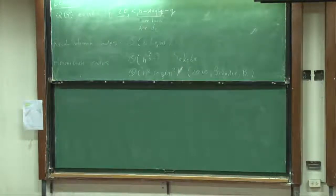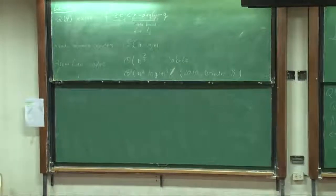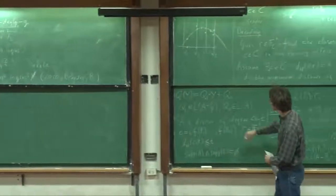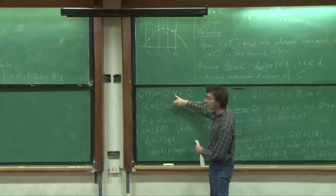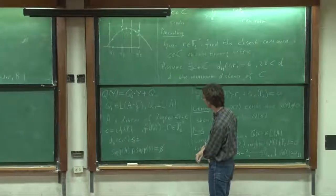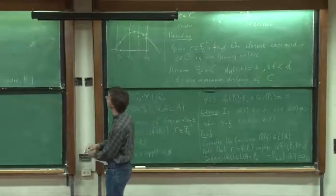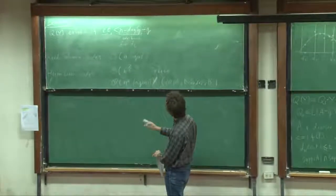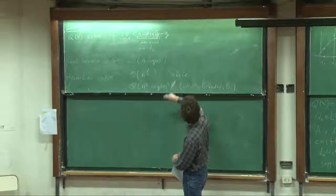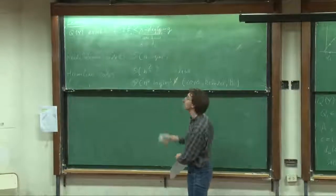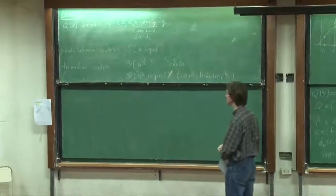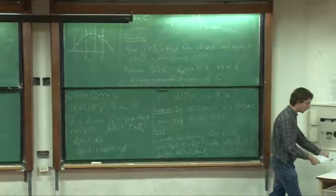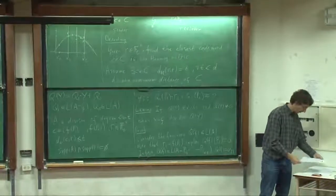There are several generalizations of this type of decoding. One way is to allow higher powers of the variable y as well, which sometimes allows you to correct even more errors. That is one way to get rid of the minus-genus penalty. There are other ways, and I will explain one tomorrow.